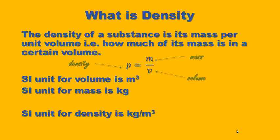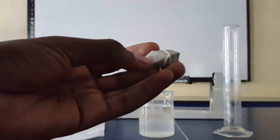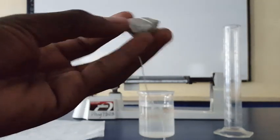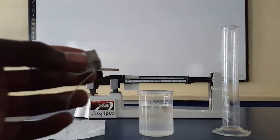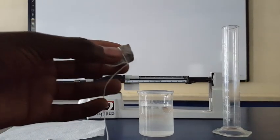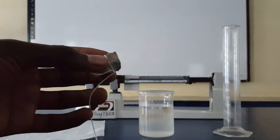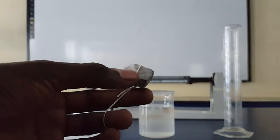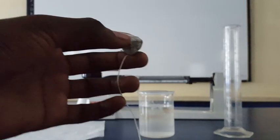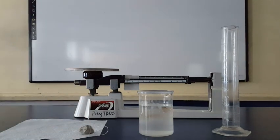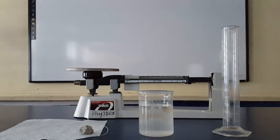We might be able to determine the mass of this object, but determining its volume might be a little tricky. The density of a cuboid can be found by determining its volume — length times width multiplied by height. But for the stone, it's a very irregular shape, so finding the volume that way would be very difficult. This experiment shows one method using a measuring cylinder.